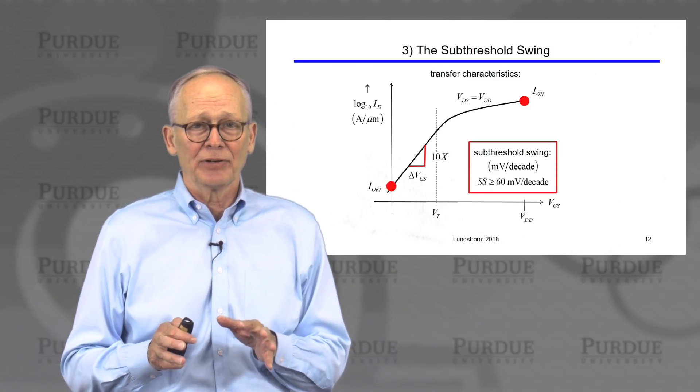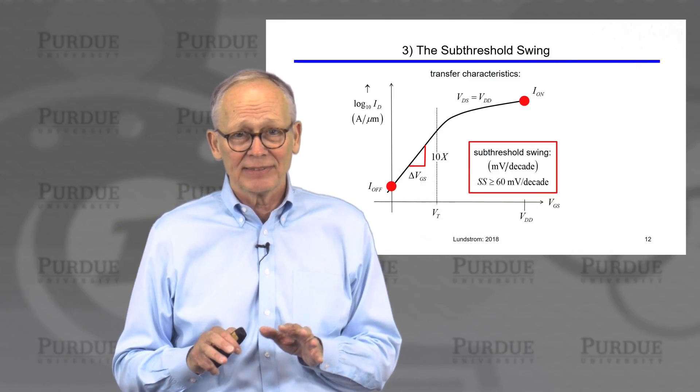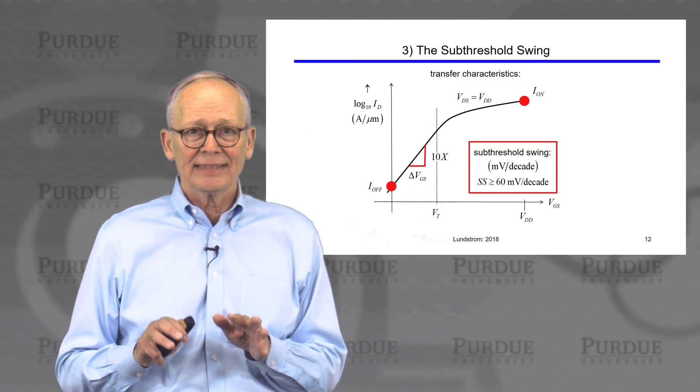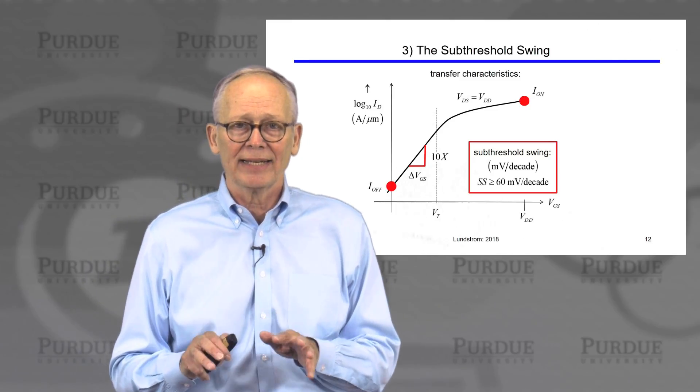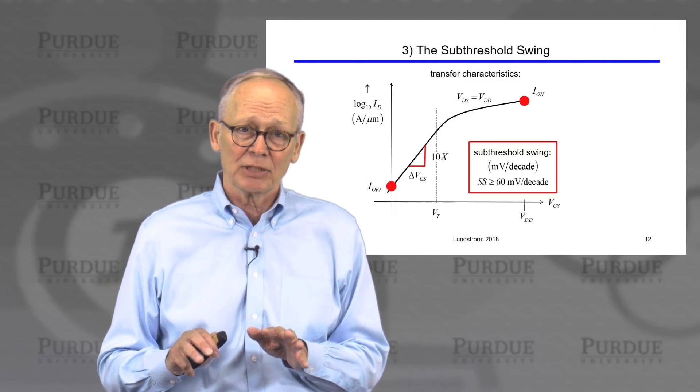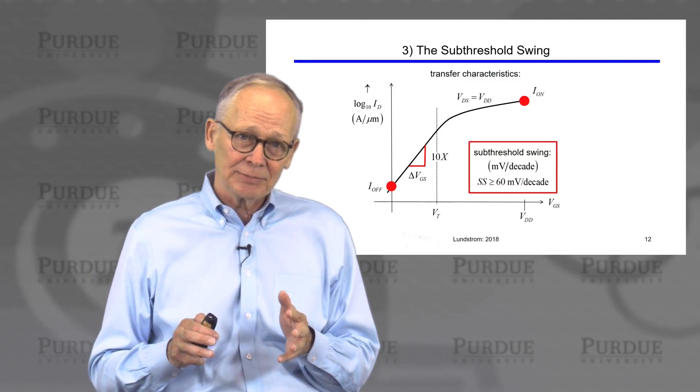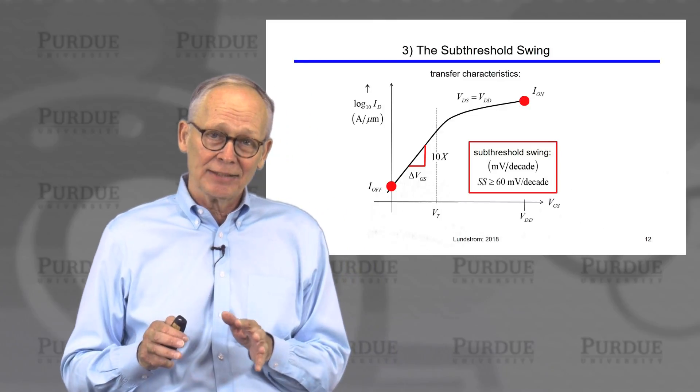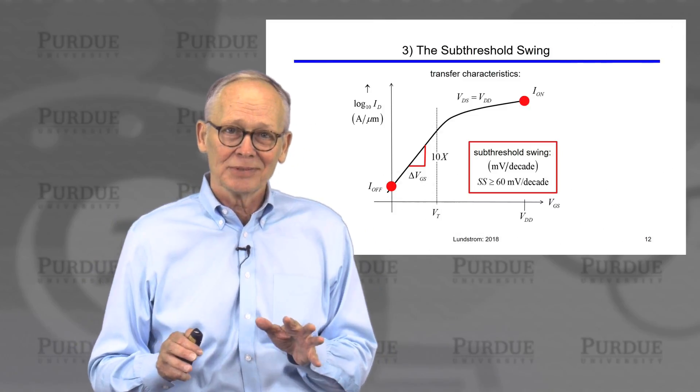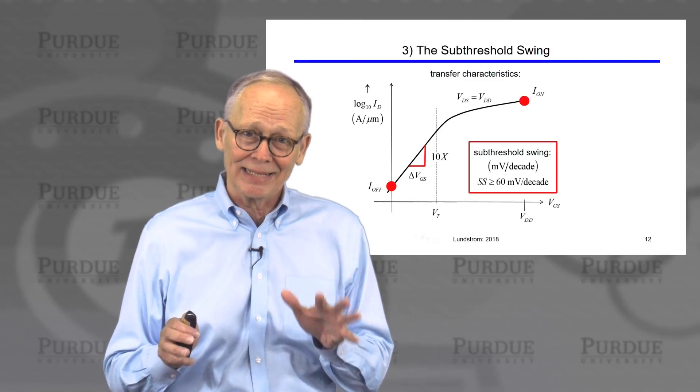And we talked about a very important point. We'll explain the physics later. You cannot have a sub-threshold swing less than 60 millivolts per decade in a MOSFET that's constrained by the physics of how a MOSFET operates. If you analyze measured characteristics and you find a number smaller than that, you've done something wrong. Or you've invented a new device and you'd better patent it immediately.